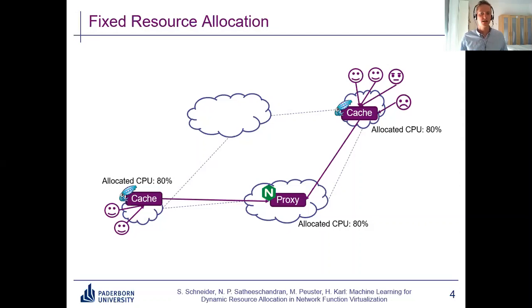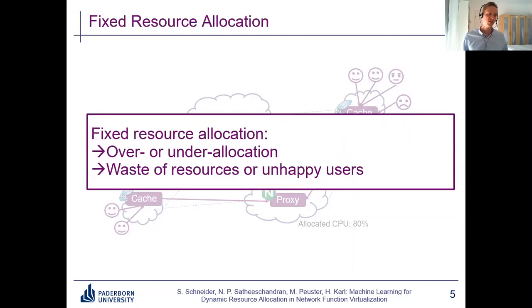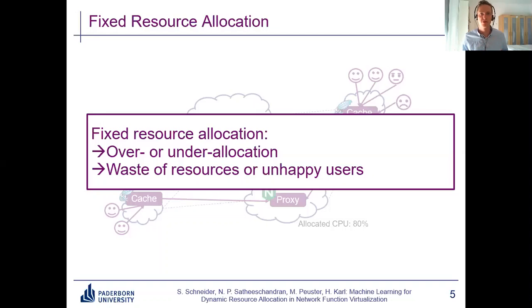If I keep adding more and more users to this VNF, at some point it no longer has enough resources to properly process all the requests. The service quality decreases or the service even completely breaks for these users — and that's really bad. So with fixed resource allocation, over or under allocation is very easy to happen. We either waste resources and money, or we have unhappy users because we can't satisfy their demand.